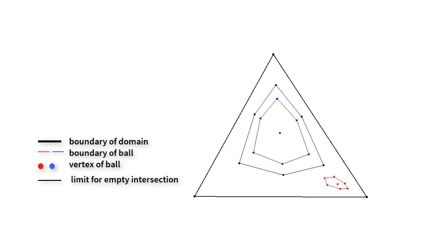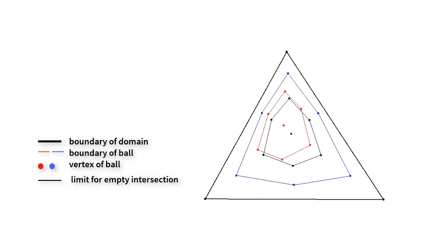Here, in a triangular domain, we consider the intersection of the red sphere with the blue sphere. As long as the centers are far enough from one another, they do not intersect. Similarly, if the two centers are too close, the intersection of the spheres is empty.